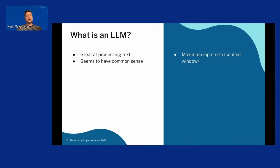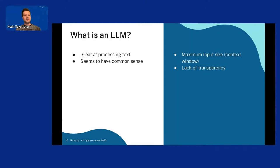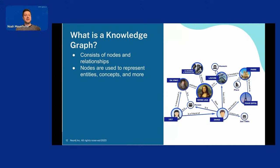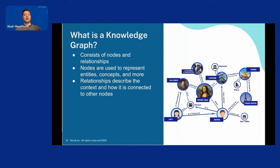But there are also some cons with LLMs. They have a maximum input size called the context window, which means it can only consider a set amount of text at once — otherwise you have to split the text into different prompts. There's also a lack of transparency: we can give LLMs an input and get an output but we can't really say why we got it. And what is a knowledge graph? It's a graph that consists of nodes and relationships. Nodes represent entities, concepts, and more. Relationships describe the context and how nodes are connected to other nodes.